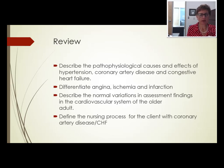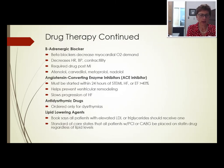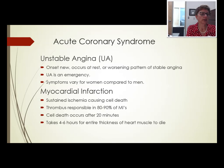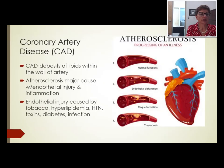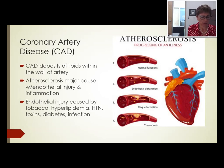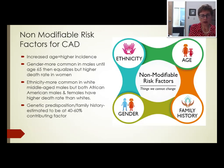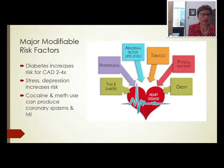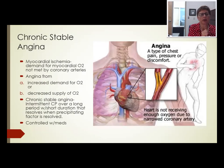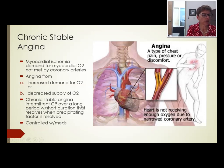That was a long lecture on the pathophysiological causes and effects of coronary artery disease — from atherosclerosis, which involves deposits of lipids within that arterial wall, from endothelial injury and inflammation caused by poor lifestyle choices and also genetics. Those non-modifiable risk factors we cannot change, but we can address the modifiable ones — and that's our job as nurses to teach about them. Chronic stable angina is intermittent chest pain over a long period of short duration that resolves when the exercise or precipitating factor stops.